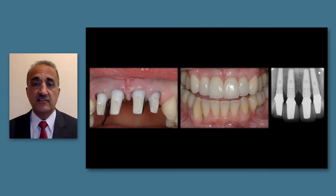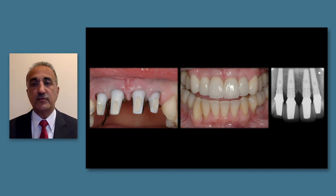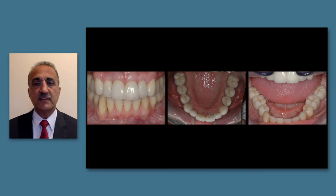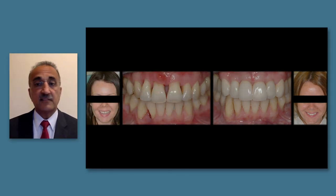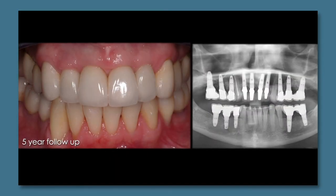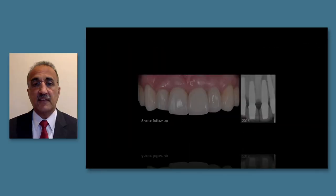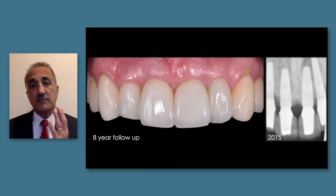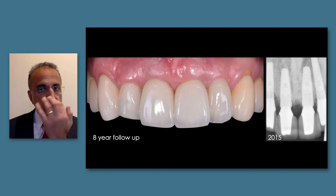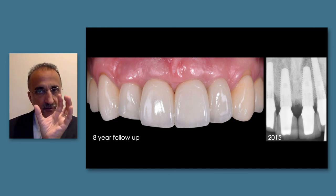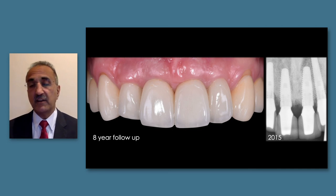The initial restorations were cement-retained - to be fair, today we would do everything screw-retained, as that is the current trend. Careful use of retraction cord to control cement excess is very important. The case is finished with individual teeth as the patient requested. Before-and-after comparison and the five-year follow-up show a very nice, stable outcome. At eight years, the outcome remains stable - interestingly, we see some recession on the teeth but not on the implants. The bone topography between the two central incisors, which was reversed initially, appears to be mineralizing with bone growing into the papillar area.